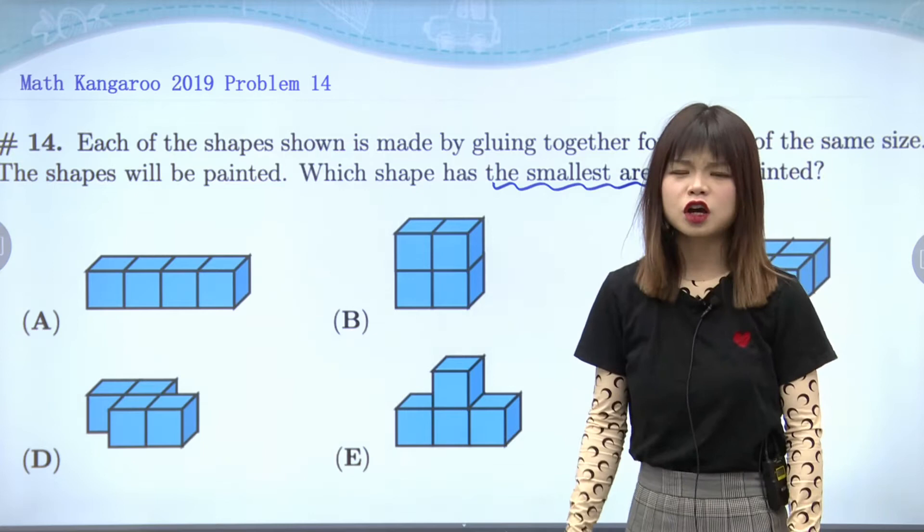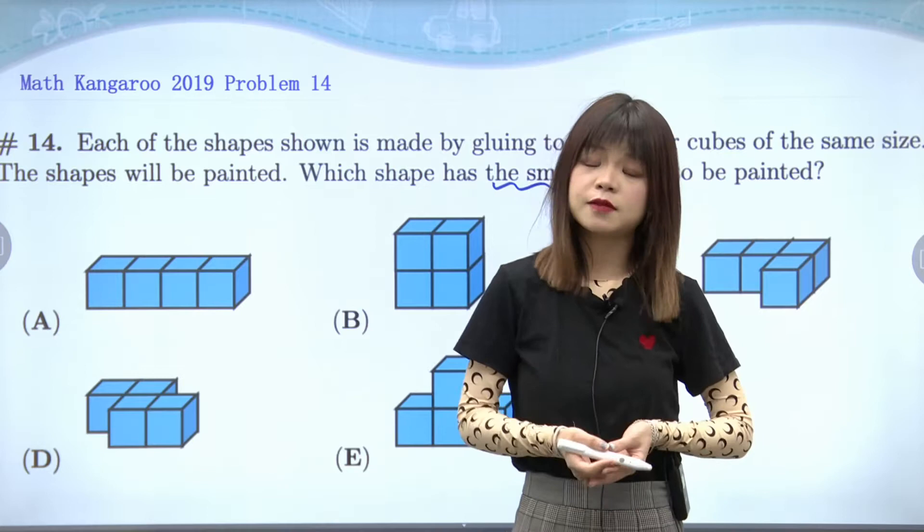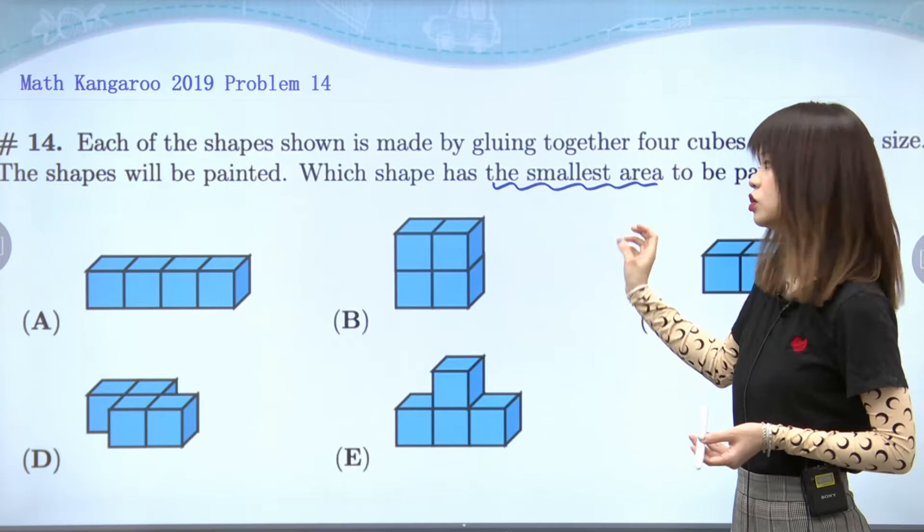I have a question. Since we have four exactly the same cubes, they should have the same number of faces, right? So how can we have the smallest area?